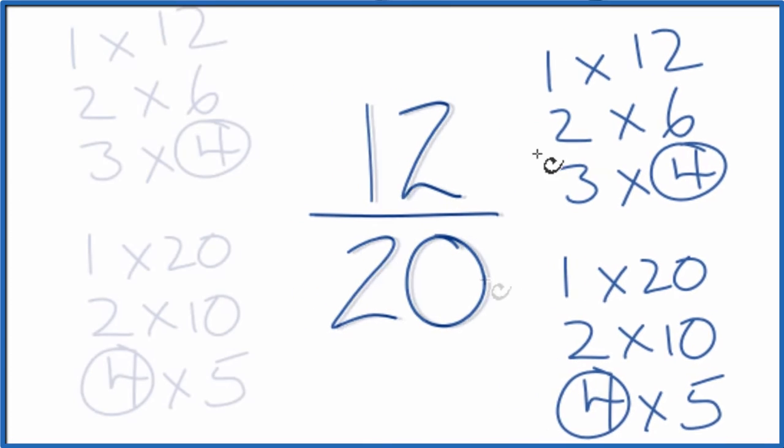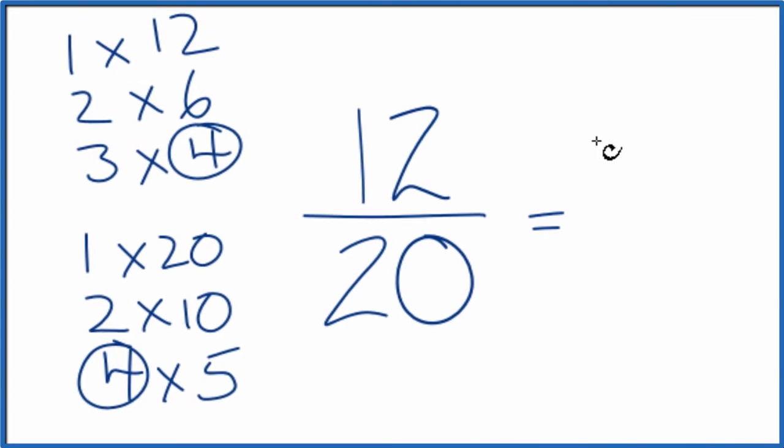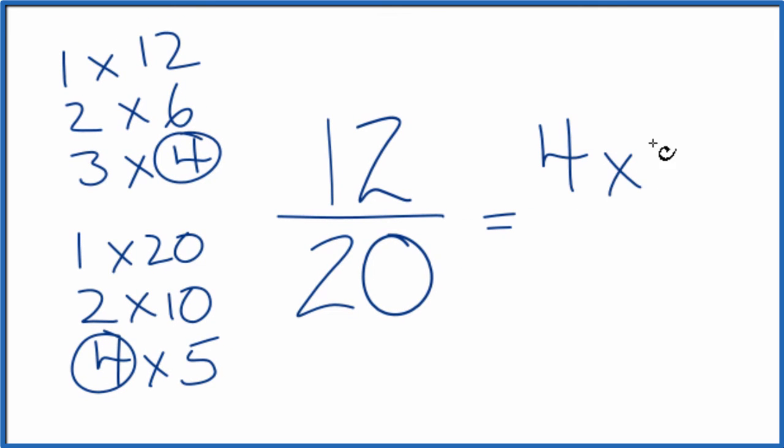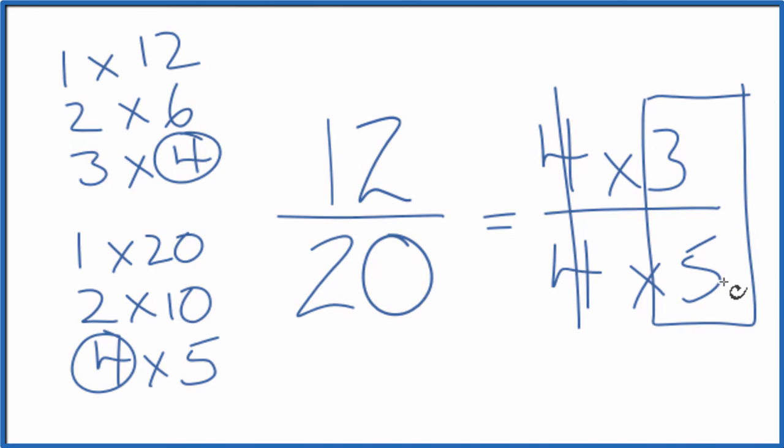Let's move these over here. So we can think of it this way. We could say 4 times 3, that would equal 12, and then 4 times 5, that equals 20. And we can just get rid of these right here, and we end up with 12 over 20 simplifying to 3 over 5.